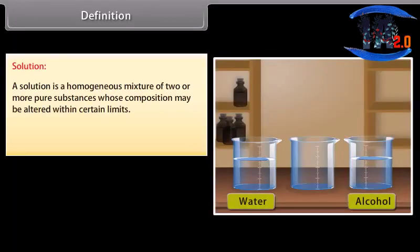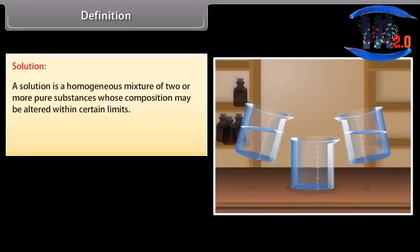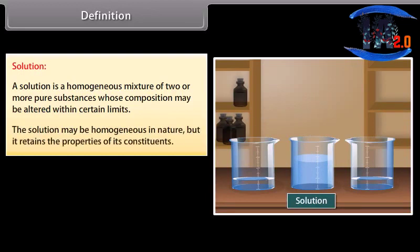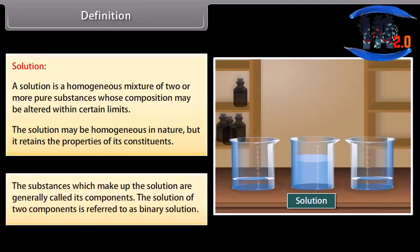A solution is a homogeneous mixture of two or more pure substances whose composition may be altered within certain limits. The solution may be homogeneous in nature but it retains the properties of its constituents. The substances which make up the solution are generally called its components. The solution of two components is referred to as a binary solution.